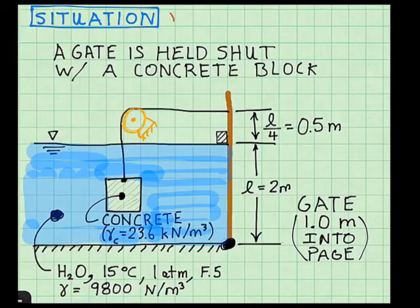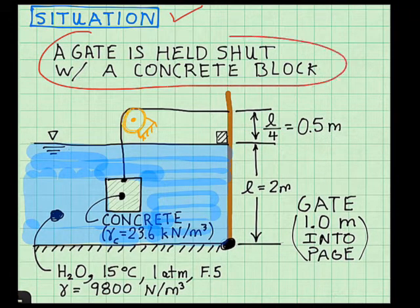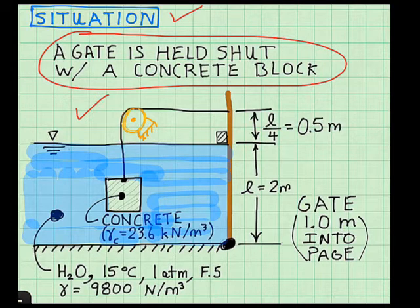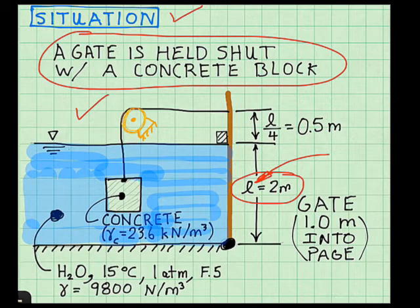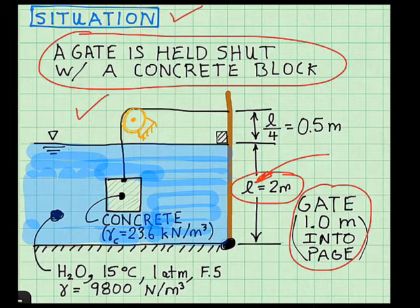Here's how I define the situation. I describe the problem in one statement. I sketch my situation diagram. I add the dimensions on, and notice that I keep the variable L here. I describe the gate—it's 1 meter into the page. I document the needed fluid properties here and the properties of the concrete here. I should have probably written down an assumption and stated that the pulley is frictionless.